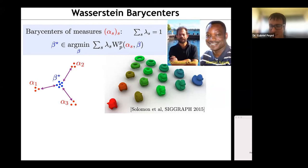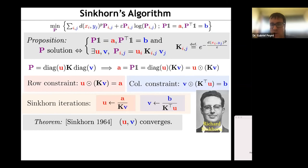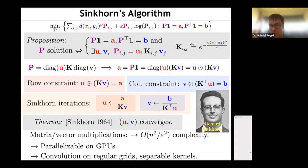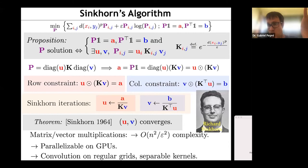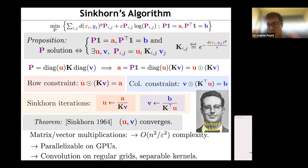Sinkhorn corresponds to alternating projections — you have two constraints (A and B) and Sinkhorn alternatingly projects the kernel onto each. It's a KL-divergence projection, not a Euclidean projection. This yields classical optimization convergence bounds, giving the n-squared over epsilon iteration bound. In more complex problems beyond classical optimal transport, one might use ADMM, Douglas-Rachford, or Dijkstra's algorithm. But for classical optimal transport, Sinkhorn is a very simple and effective algorithm.